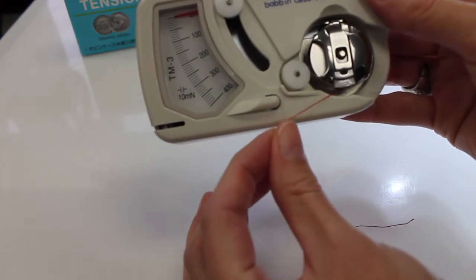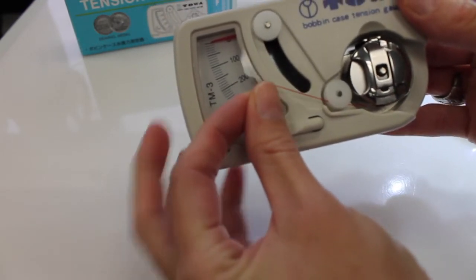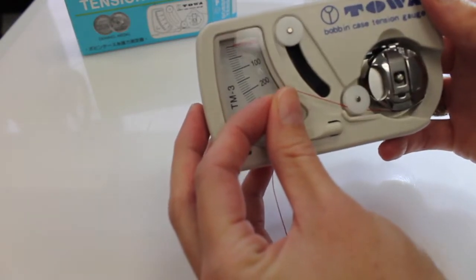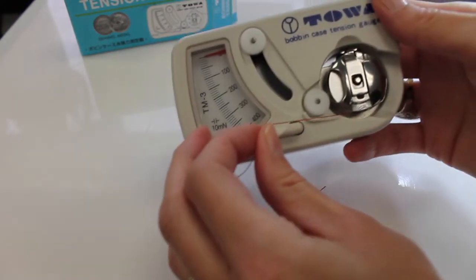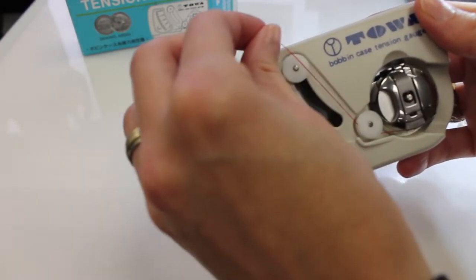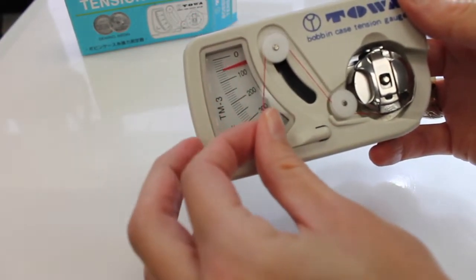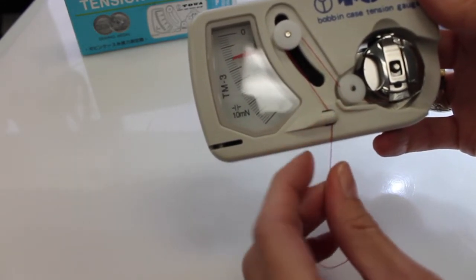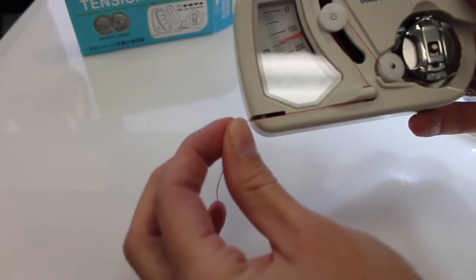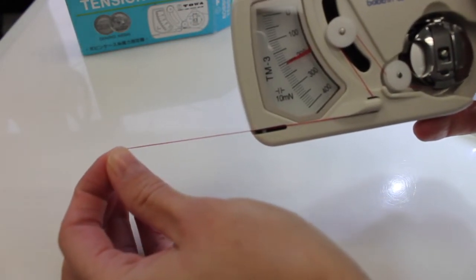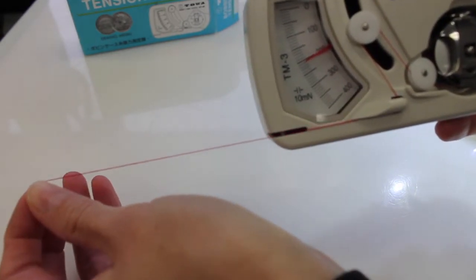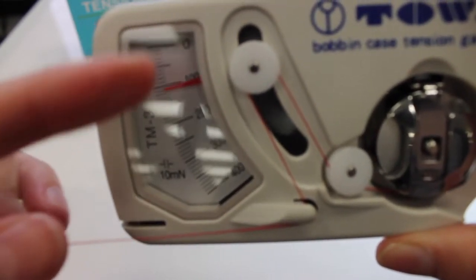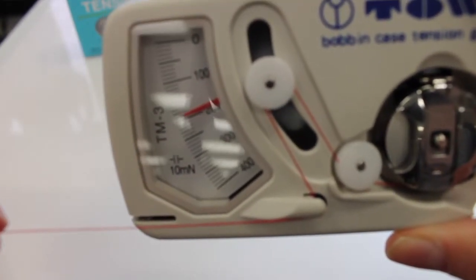Now I'm going to take my tail of thread, and I'm going to bring it underneath this first little white wheel and then up and over the top of the second white wheel. So again, taking my thread across under the first white wheel, up and around the top of the second white wheel. And then I'm going to bring the thread around this little finger that's pointing to the right, and I'm going to take my thread and a long steady pull out to the left. Now as I take that thread and pull it to the left, the Towa gauge right here is going to give me a numerical reading.